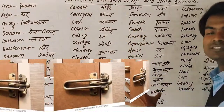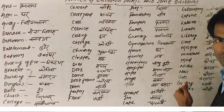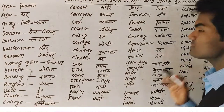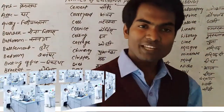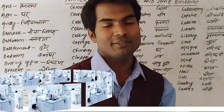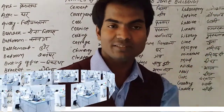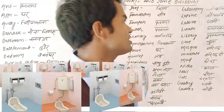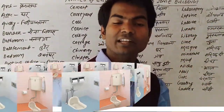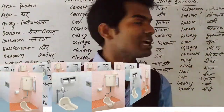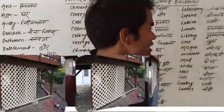Now we have seen some words; these are the remaining parts. Laboratory — laboratory ka matlab hota 'prayog shala,' where scientists do research, that is called laboratory. Latrine — latrine ka matlab hota 'shauchalay.' Lattice — lattice ka matlab hota hai 'jali.'